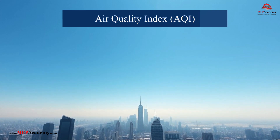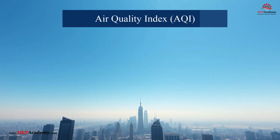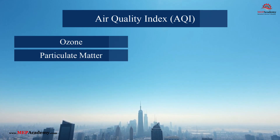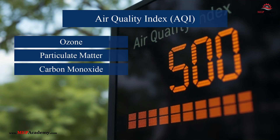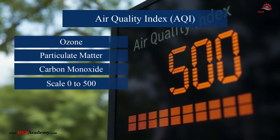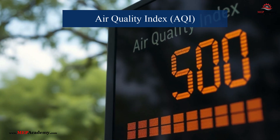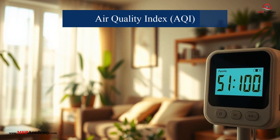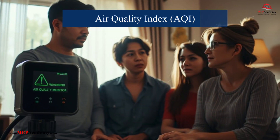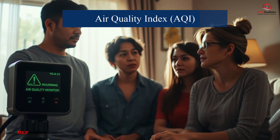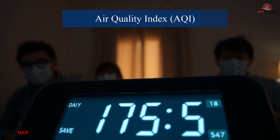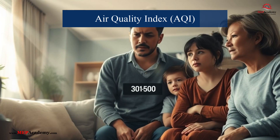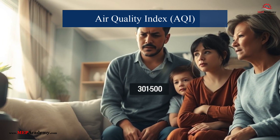The AQI is a standardized metric used to represent overall air quality, incorporating multiple pollutants such as ozone, particulate matter, and carbon monoxide. The scale ranges from 0 to 500, with lower values indicating better air quality: Good (0–50), Moderate (51–100), Unhealthy for Sensitive Groups (101–150), Unhealthy (151–200), Very Unhealthy (201–300), and Hazardous (301–500).